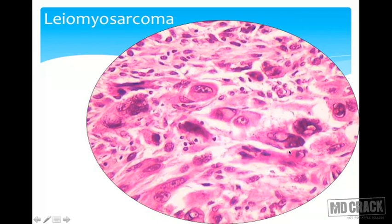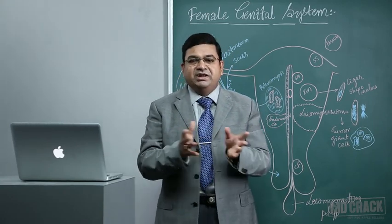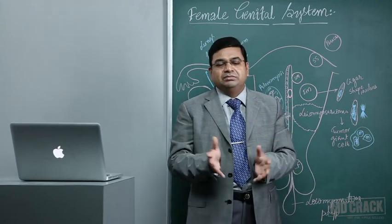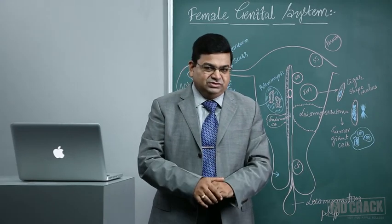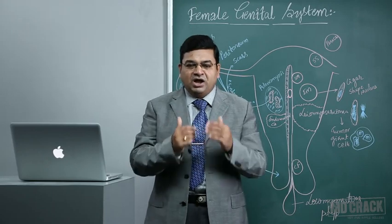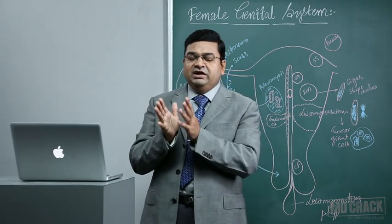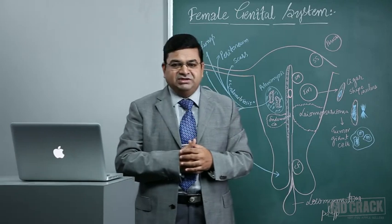Microscopically, leiomyosarcoma shows all features of anaplasia: marked pleomorphism, hyperchromatic and prominent nuclei, increased nuclear-cytoplasmic ratio, tumor giant cell formation, and abnormal multipolar mitotic figures. Extensive areas of hemorrhage and necrosis are present. These spindle-shaped cells show a marked degree of anaplasia. Based on mitotic count and hemorrhage/necrosis, leiomyosarcomas are graded as well-differentiated, moderately differentiated, or undifferentiated (anaplastic).